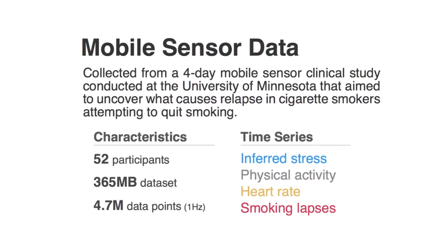The inferred stress is probabilistic — it may not always be accurate but is a good estimate, shown in blue. Physical activity, measured by sensors on the devices, is shown in gray. Heart rate is also available. Smoking lapse events are discrete events with a start time, end time, and duration — shown in red. So the first three — inferred stress, physical activity, and heart rate — are continuous time series, while smoking lapse is a discrete event.